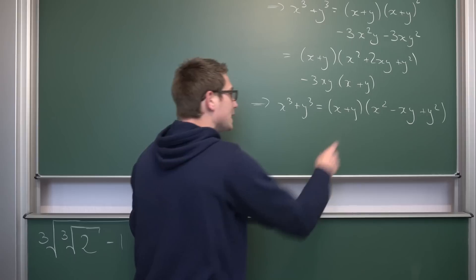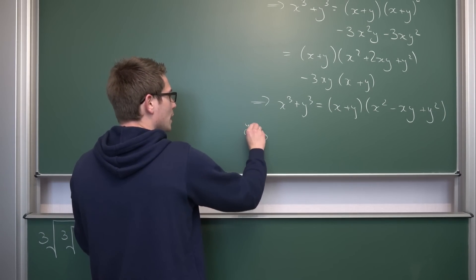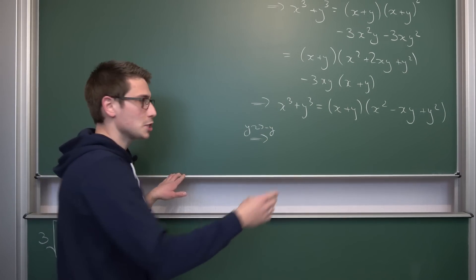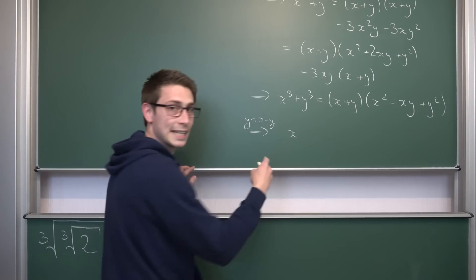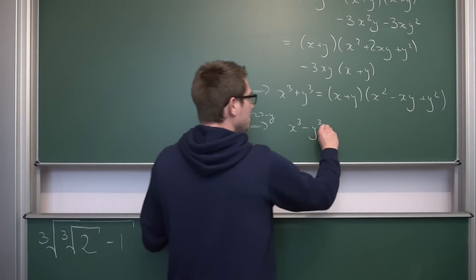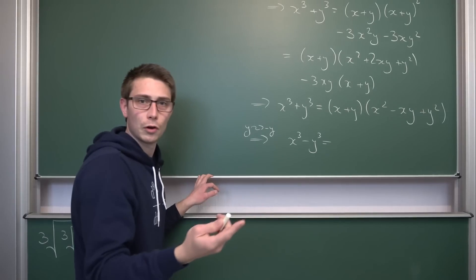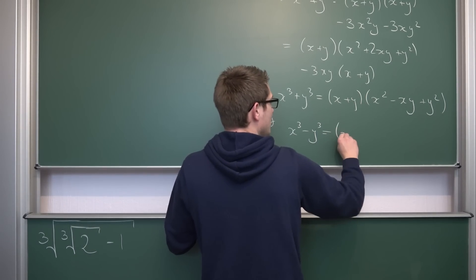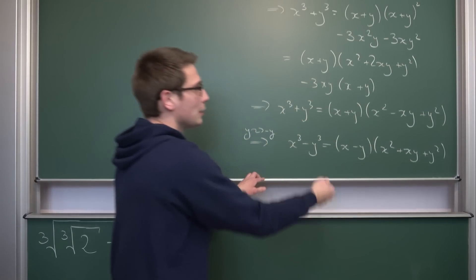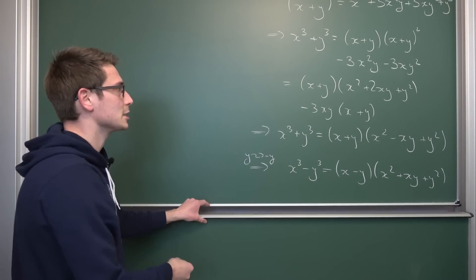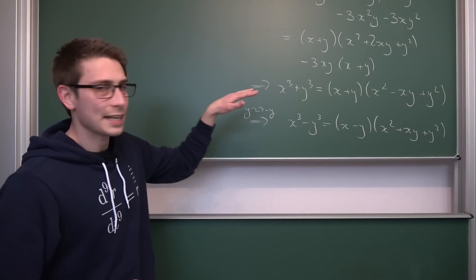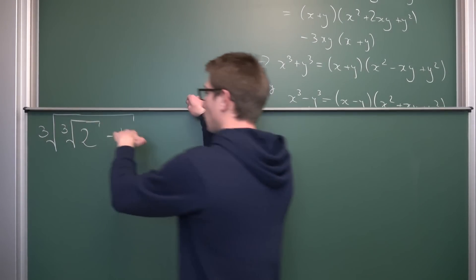Now we can manipulate this identity further by substituting y → −y. Since (−y)³ = −y³, this gives us the difference of two cubes identity. This is also important in number theory in general. We just put a negative sign in front of all single y terms, giving us x³ − y³ = (x − y)(x² + xy + y²). Now that we have both identities, we can start applying them to the radical we want to denest.